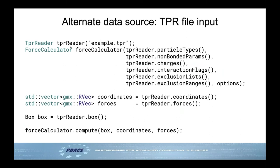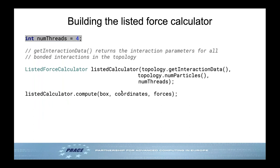That's what the alternate data source looks like in code: create a TPR reader, give it your TPR file, and instead of the topology you use the TPR reader to create the force calculator, coordinate and force buffers, and then call compute to obtain forces. NbLib also provides listed forces — GROMACS nomenclature for bonded forces (bonds, angles, dihedrals) — constructed and called analogously to the non-bonded force calculator.